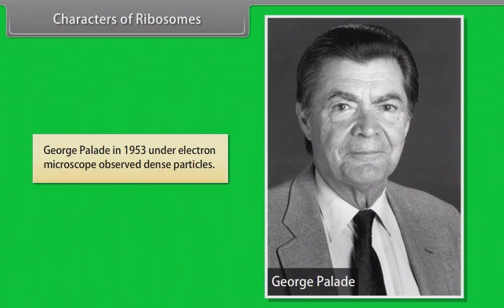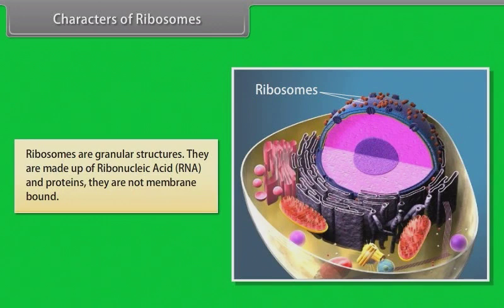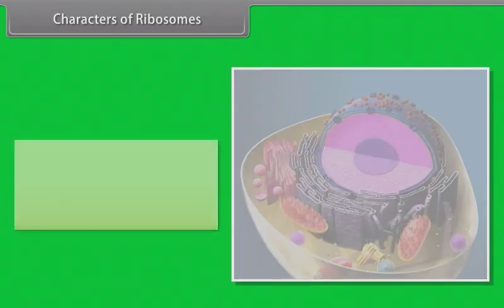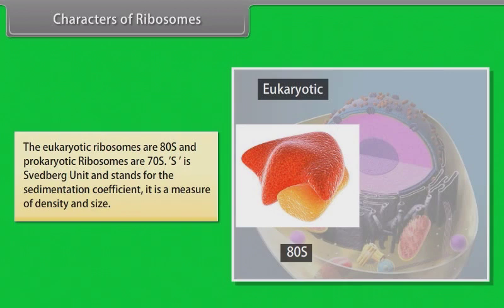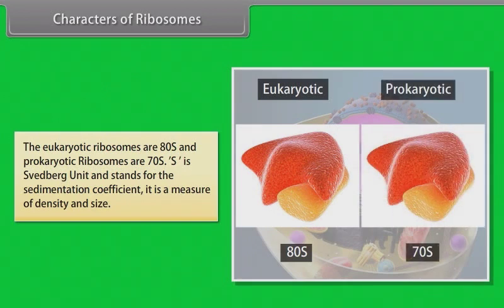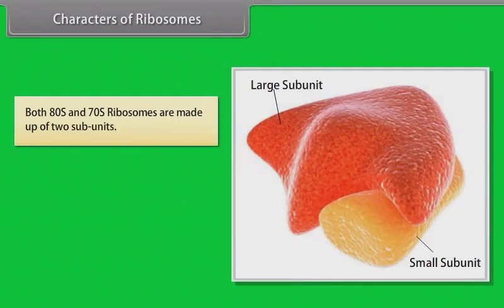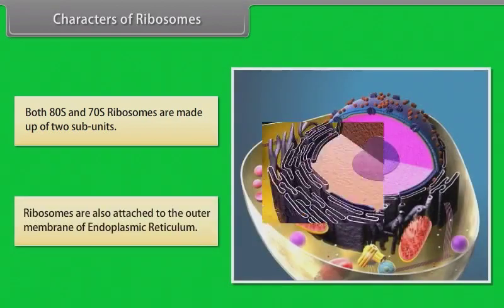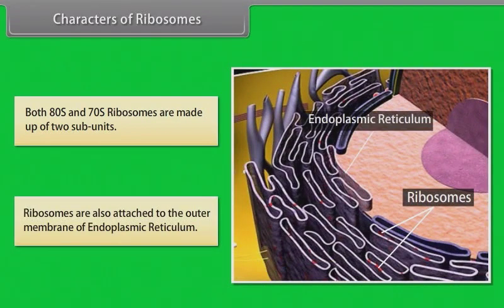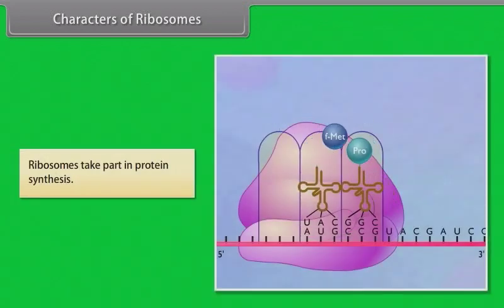George Palade in 1953 observed dense particles under the electron microscope. Ribosomes are granular structures made of ribonucleic acid (RNA) and proteins, and they are not membrane bound. The eukaryotic ribosomes are 80S and prokaryotic ribosomes are 70S, where S is the Svedberg unit standing for the sedimentation coefficient — a measure of density and size. Both 80S and 70S ribosomes are made up of two subunits. Ribosomes are also attached to the outer membrane of endoplasmic reticulum and take part in protein synthesis.